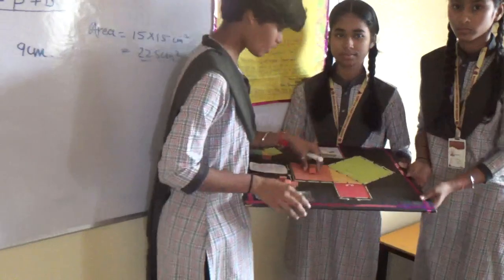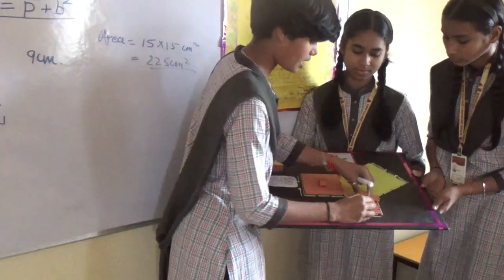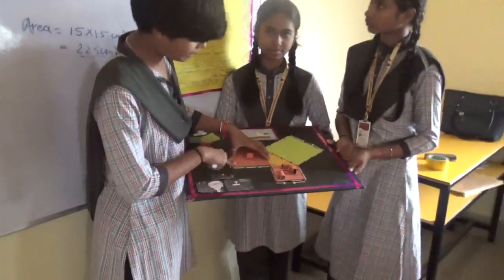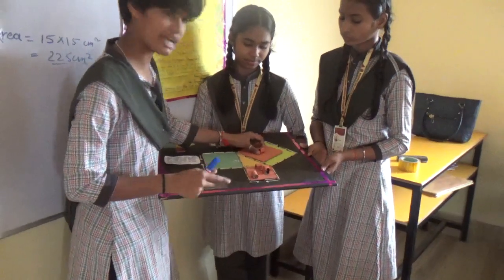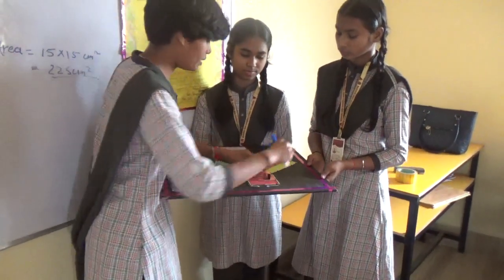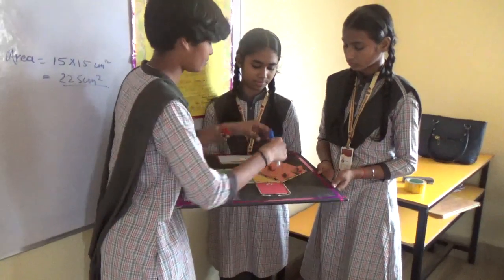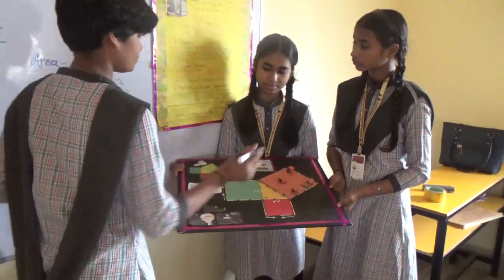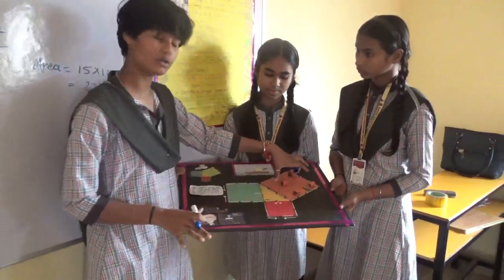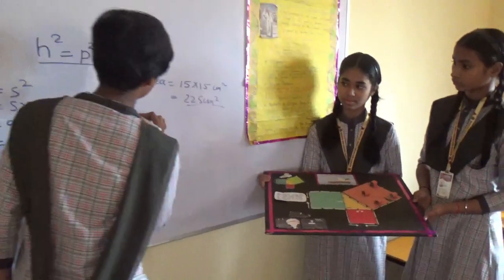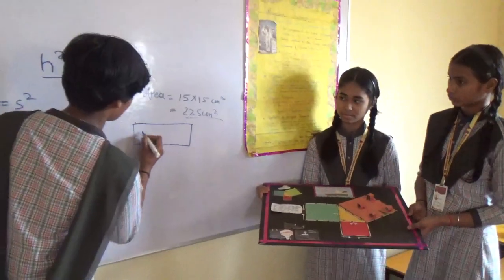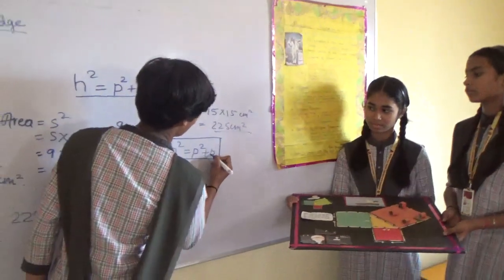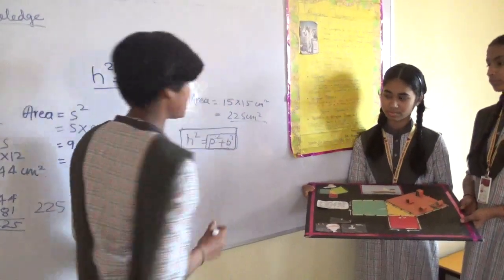We are here with a model to prove that. This cardboard is completely overlapped. When we put it here, we have seen that it is equal. The area of the base square and perpendicular square, when we add it, it will be equal to the hypotenuse square. The square of hypotenuse is completely equal to the sum of the square of base and the square of perpendicular.